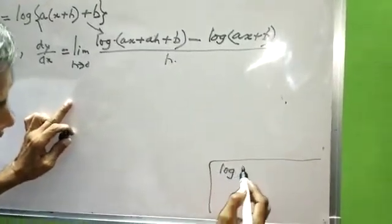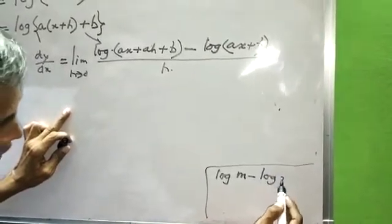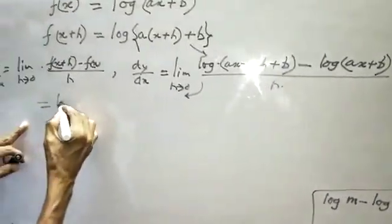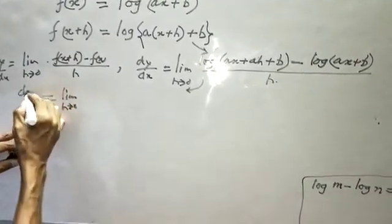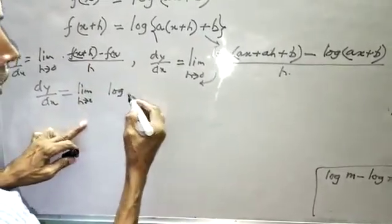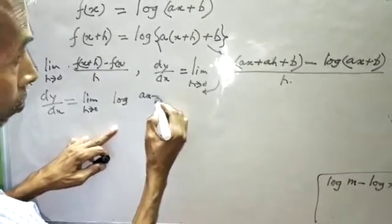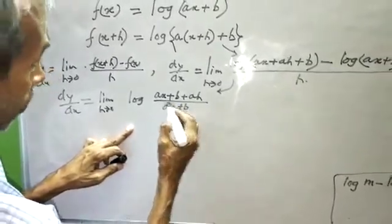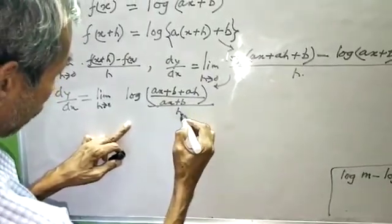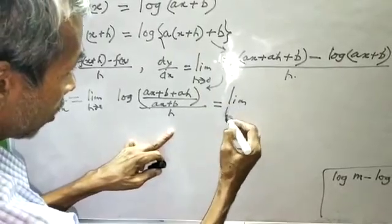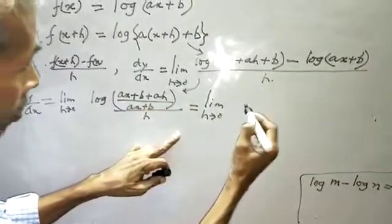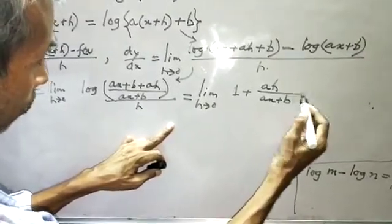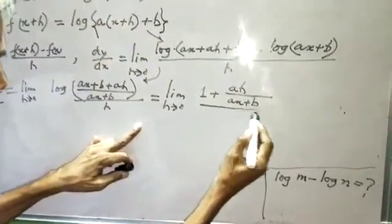Using log(m) minus log(n) equals log(m/n), this becomes limit h tends to 0 of log[(ax + b + ah) / (ax + b)] by h, which equals limit h tends to 0 of log[1 + (ah)/(ax + b)] by h.